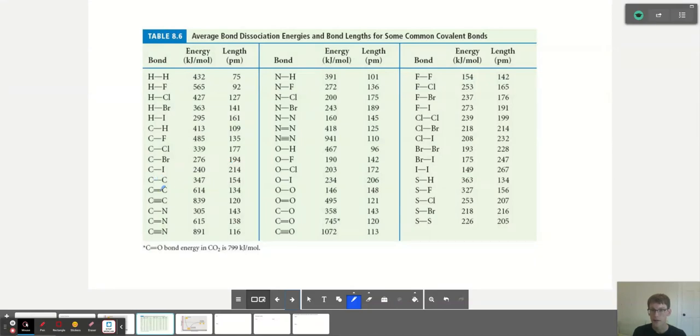What is really interesting here is if we have like a single, double, and a triple bond to compare C to C, notice how as we get more bonding, the strength of the bond goes up. So a single bond between carbon and carbon is just 347 kilojoules per mole. A triple bond would be 839.